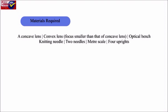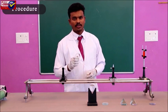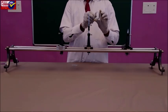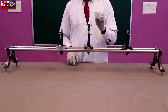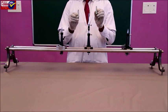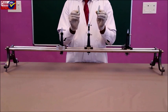Materials required: concave lens, convex lens with focal length smaller than that of the concave lens, optical bench, knitting needle, two needles, meter scale, and four uprights. Procedure: A concave lens always forms a virtual image, hence its focal length cannot be found by a direct method. A convex lens is used to converge the diverging rays coming from the concave lens so that a real image is obtained.